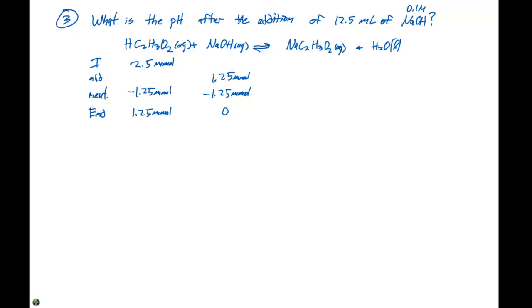And then, we're going to add 1.25 millimoles of salt. So, after all of this reaction is complete, we have 1.25 millimoles of acetic acid and 1.25 millimoles of sodium acetate. So, this actually becomes kind of a special point in the progress of this particular reaction.